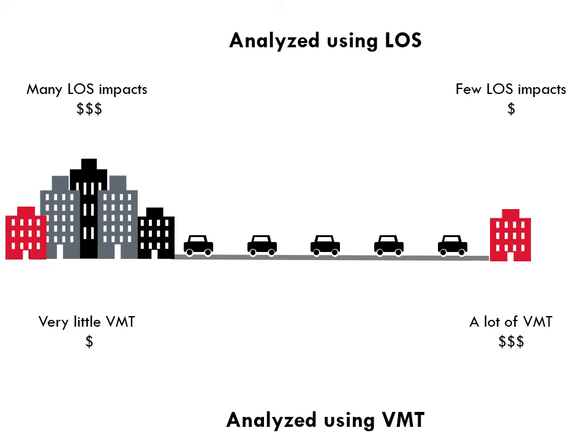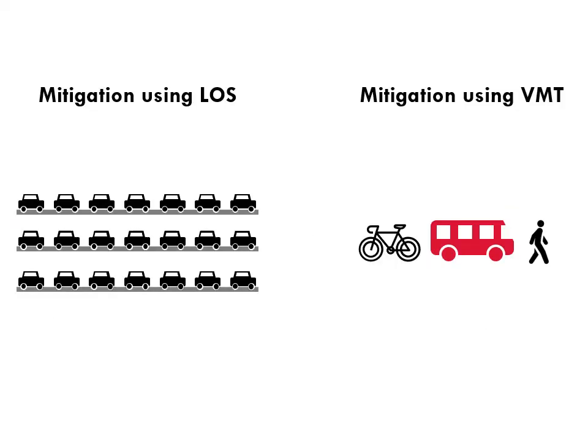As you can see, shifting to VMT changes the incentives for developers. They're no longer drawn to the fringe; instead, they're drawn to infill projects downtown. Another benefit of embracing VMT for traffic impact analysis is that the types of mitigations developers provide are more aligned with our urban planning goals. Whereas level of service mitigation is all about widening roads and smoothing traffic for drivers, mitigation for VMT can be about improving other modes by adding sidewalks or increasing transit service.